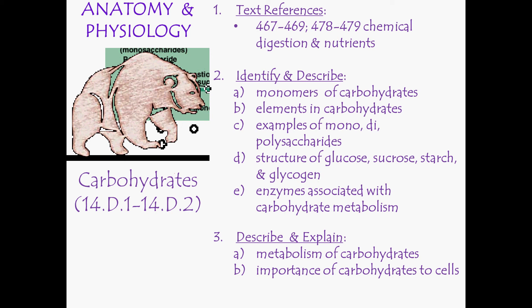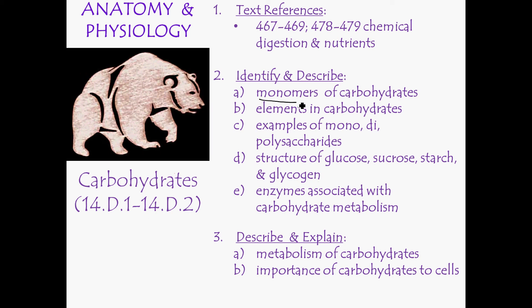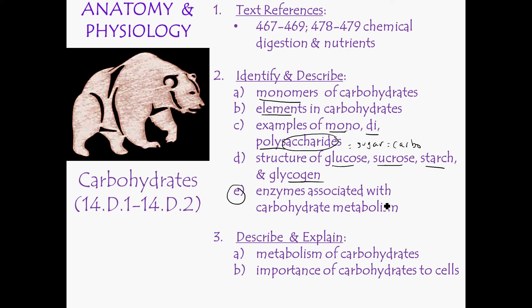To summarize: be able to identify the monomers and the elements involved, give examples of mono-, di-, and polysaccharides, and switch between the terms saccharide, sugar, and carbohydrate. Know the specific structures of glucose and sucrose, and how starch and glycogen are similar but different. Give examples of enzymes involved with carbohydrate metabolism, explain the breakdown pathway, and explain why carbohydrates are important to cells. Bring your questions to class.